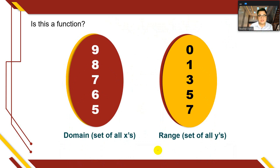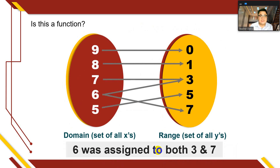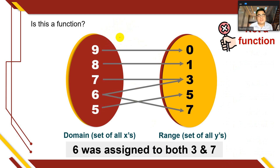For the next arrow diagram with pairs (9,0), (8,1), (7,3), (6,3), (6,7), (5,5): this is not a function because 6 is assigned to both 3 and 7 — meaning 6 is repeated as a first element. This is called one-to-many, which is not a function but just a mere relation.